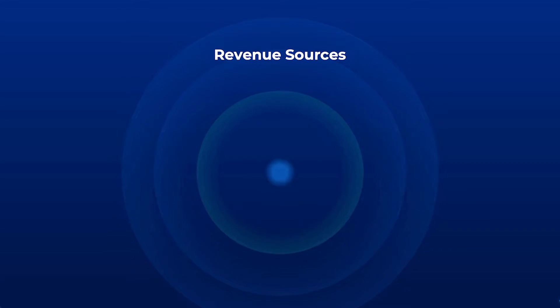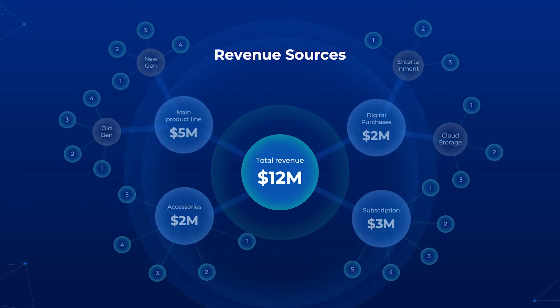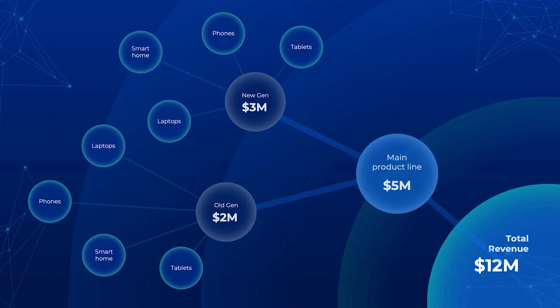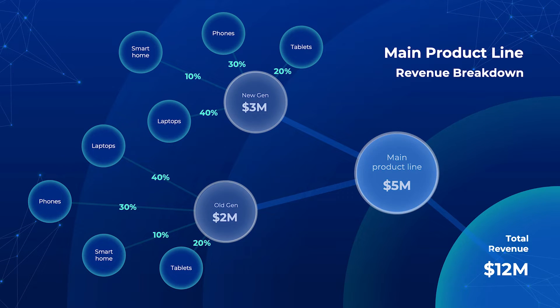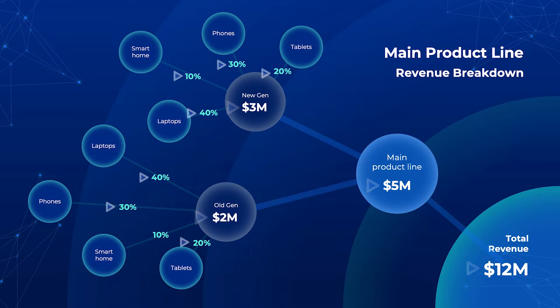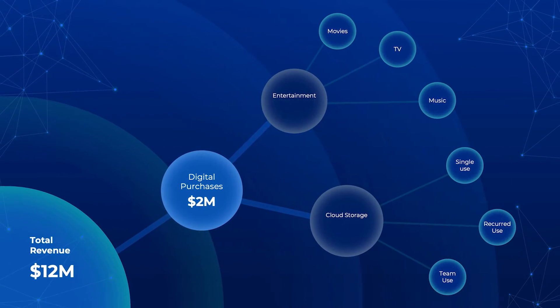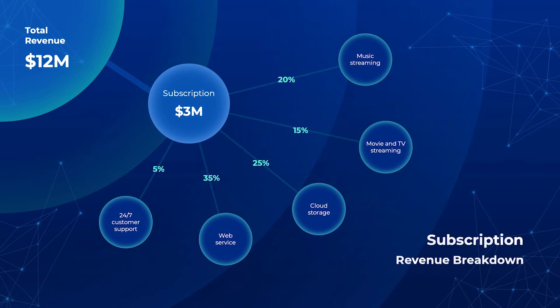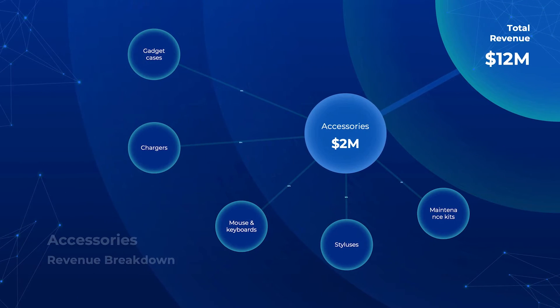Which items contribute the most to the company's bottom line? From there, viewers can explore and understand the origin of each revenue stream in more granular detail, such as the revenue split between newer and previous generations of the main product line, by dollar amount or by percentage. Are consumers chasing the newest gadgets, or are they more frugally drawn to the older versions? Continue to zoom in into other revenue streams, and more information can be found about digital purchases, subscriptions, and accessory products.